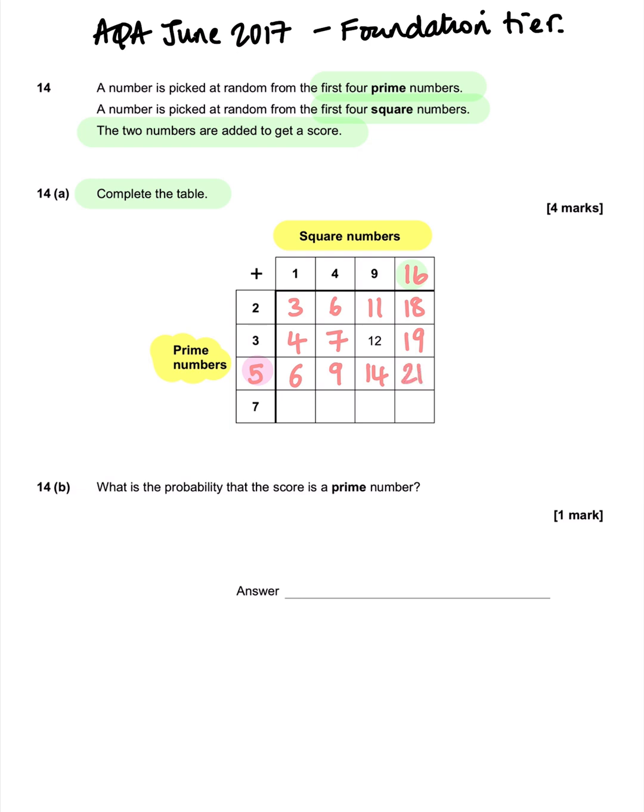16 plus 5 is 21. 7 plus 1, 7 plus 9, 7 plus 16. That's part A completed.